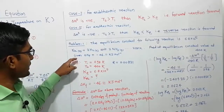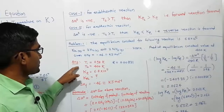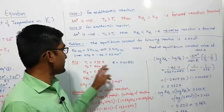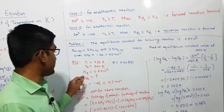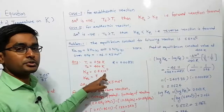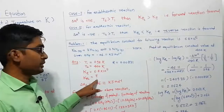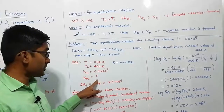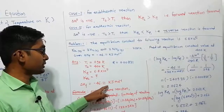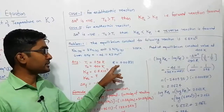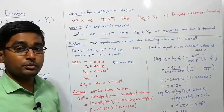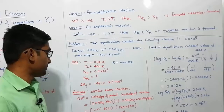Putting in the given values: T1 = 298 K, T2 = 400 K. The equilibrium constant at T1 is Kp1 = 6.8 × 10⁵, and we need to find Kp2. The heat of formation is −46.11 kJ/mol, and R = 8.314 J/mol·K (or 0.00831 kJ/mol·K).